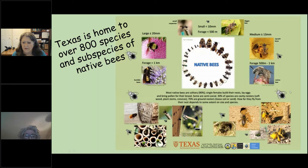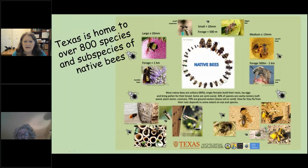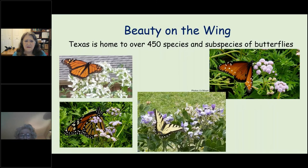Many native bees are ground nesters — you can see their little nests in the soil. A lot also live in cavities in decaying trees. Our honeybees in this area are generally one of three or four species, most of them Italian. Texas is also home to over 450 species of butterflies and moths, and many of them are right here in this area.